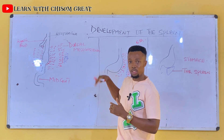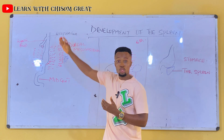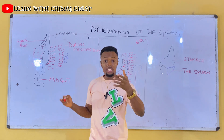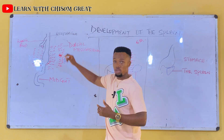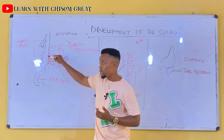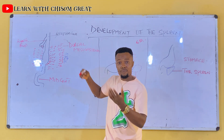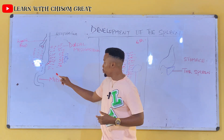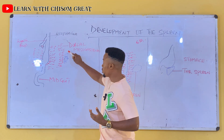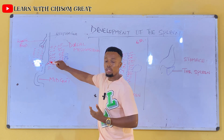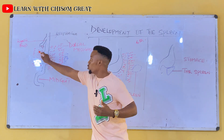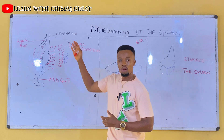Before we come to the development, let's understand this structure here. This is the foregut. As I told you in our earlier video, the foregut gave rise to the esophagus, the trachea, the lung buds, the stomach, and the first and second part of the duodenum. Then coming to the midgut — you can see the midgut here. This is the dorsal mesodersum lying on the dorsal aspect of the foregut, and this is the ventral mesodersum lying at the ventral aspect of the foregut.